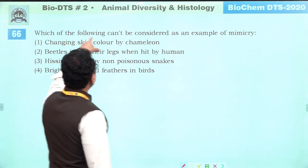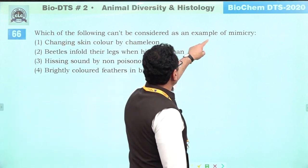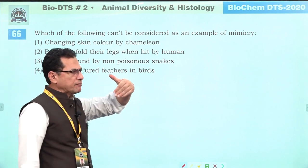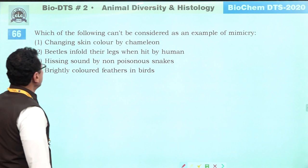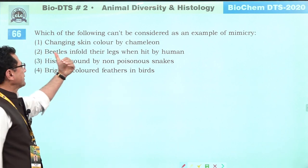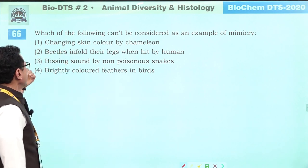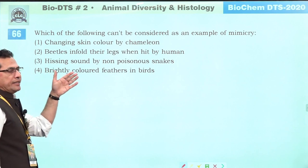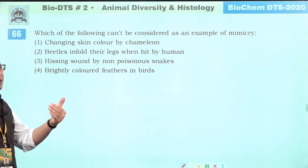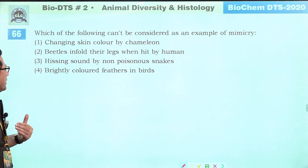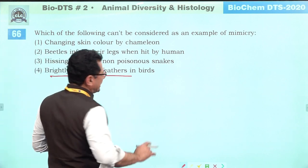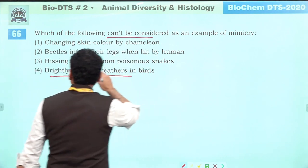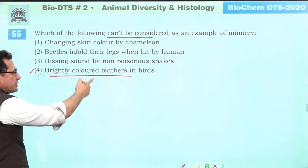Which cannot be considered an example of mimicry? Mimicry means protecting the body by resembling something else. Chameleon changes skin color — protective mimicry. Beetles that resemble other organisms. The fourth option is a natural feature with no mimicry involved. Answer is four.